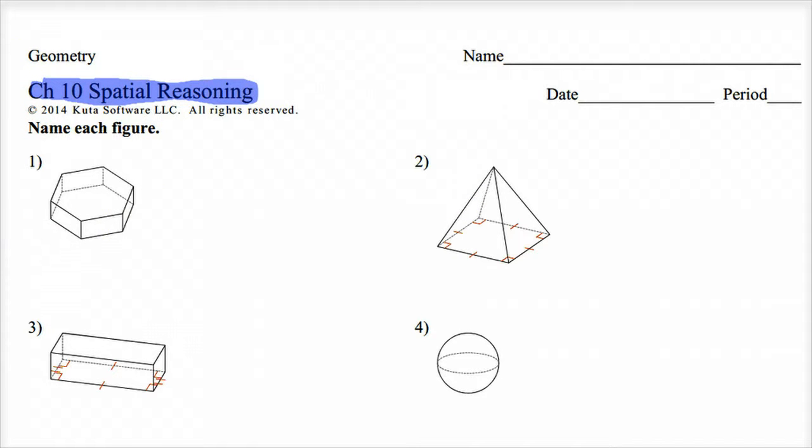So first I have this here, it says name each figure. Well our figures kind of fall into four main categories. I'll split those up here and we would have our pyramids and then we got prisms.